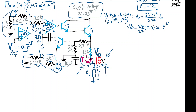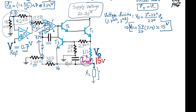There you go — we found the output voltage of 15 volts in this circuit. Therefore the output of this voltage regulator is 15 volts. The next step is to show and figure out the maximum current the circuit can provide.